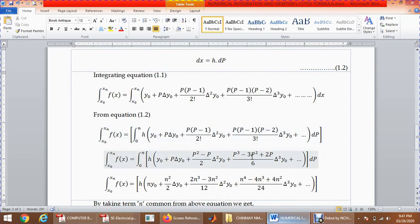Now h is outside. I will multiply these terms: y0 + p∆y0, p(p-1) means p² - p upon 2 factorial which is 2. If I multiply the numerator, I will get (p³ - 3p² + 2p)/3! which is 6, into dp. Now I am going to perform integration on the right-hand side.